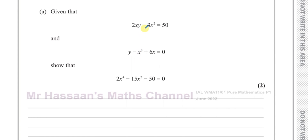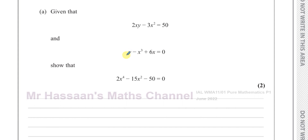Looking at these two equations, they're not linear — this one has squared, this one has cubed in it. They're non-linear simultaneous equations, and the best way to deal with them is by substitution. You look for a letter that's easy to make the subject. Making x a subject gives a fraction; making y a subject gives a fraction; making x from the other equation gives a square root or cube root. So making y the subject is the least complicated option.